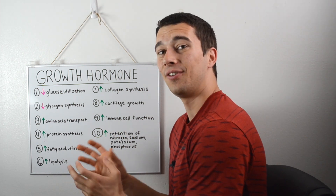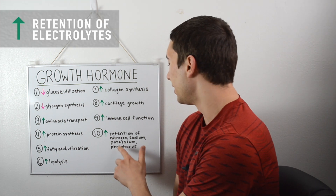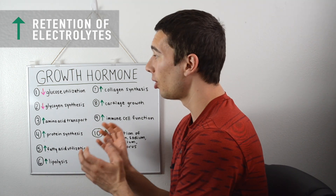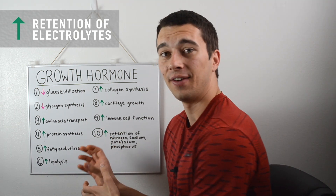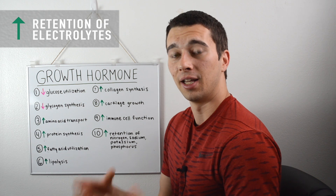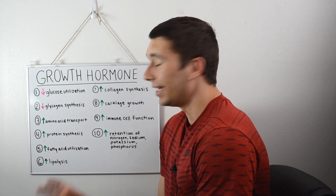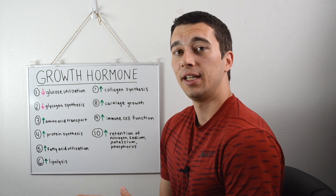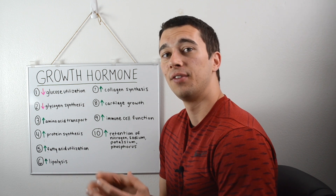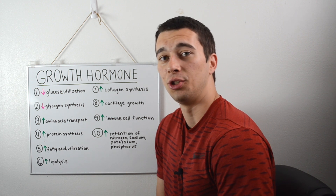Our last function of growth hormone is actually an increase in electrolytes — things like nitrogen, sodium, potassium, and phosphorus. Growth hormone has an effect on the renin-angiotensin system, which regulates the electrolyte balance and the water balance within our body. When we increase growth hormone, that regulation is going to promote a storage or maintenance of the electrolytes that we have, which is again to promote an overall tissue growth environment.